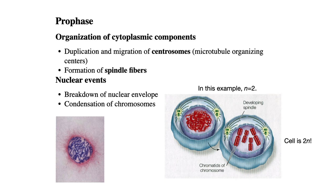Radiating from the centrosome we have what are called spindle fibers. The spindle fibers reach out and attach to the centromeres of the chromosomes. If they're going to attach to the chromosomes which are in the nucleus, and the centrosomes are in the cytoplasm, we're going to have to break down the nuclear envelope. That nuclear membrane is going to retract, fold back, and get absorbed into the cell membrane. Then the spindle fibers can reach across.